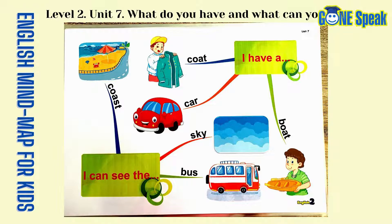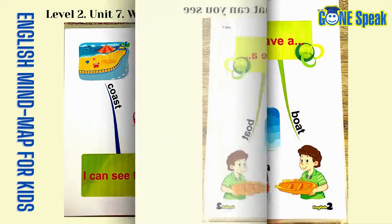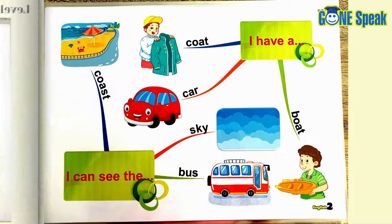Welcome to Go On Speak. This is a program of English Mind-Map for kids. Level 2, Unit 7: What do you have and what can you see? Let's practice sentences below.